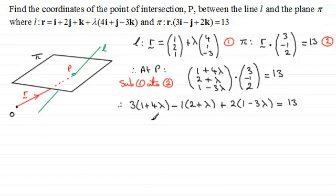And if we expand the brackets out now, we've got 3 + 12λ, and then minus 2 minus λ, plus 2 minus 6λ equals 13. And if we group up the lambda terms on the left, we've got 12λ minus λ minus 6λ, that's going to be 5λ. And then we've got 3 minus 2 plus 2, so that's just going to leave me with plus 3, and that equals 13.